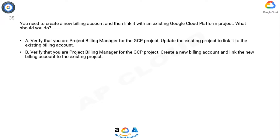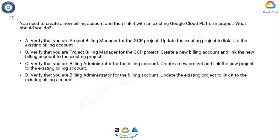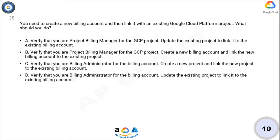Option B: verify that you are Project Billing Manager for the GCP project, create a new billing account and link the new billing account to the existing project. Option C: verify that you are Billing Administrator for the billing account, create a new project and link the new project to the existing billing account. Option D: verify that you are Billing Administrator for the billing account, update the existing project to link it to the existing billing account. Now take 10 seconds to think about the answer.